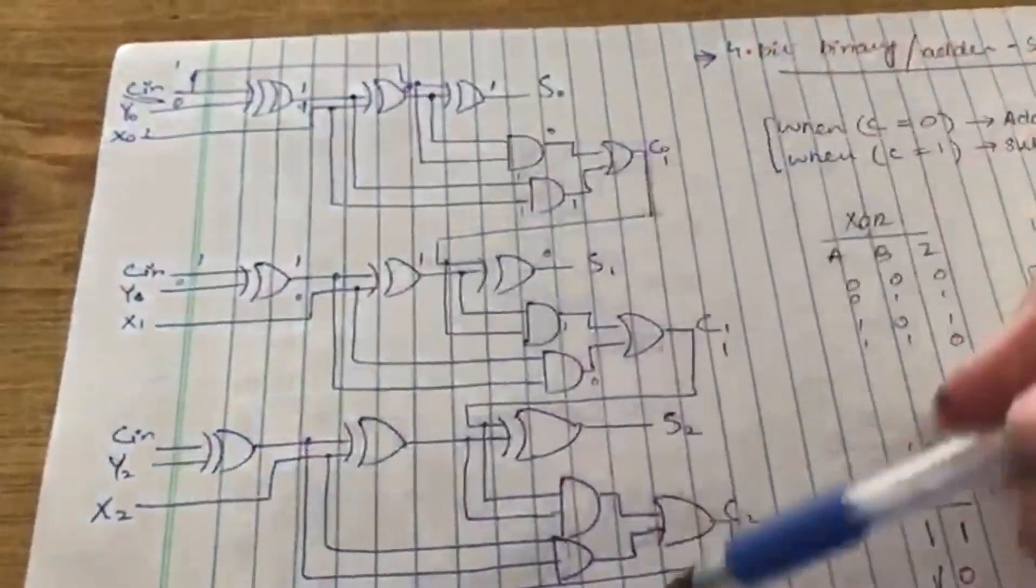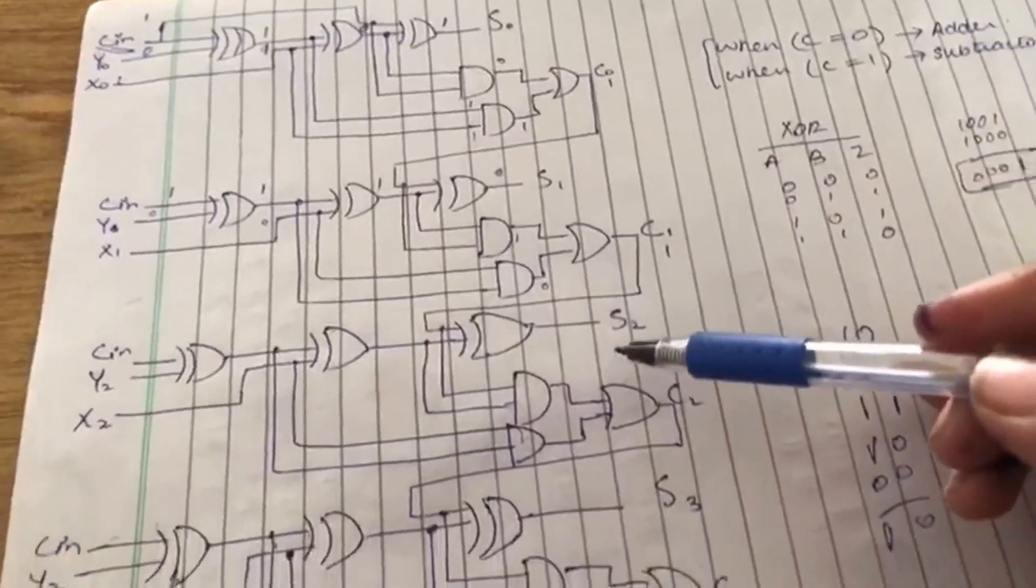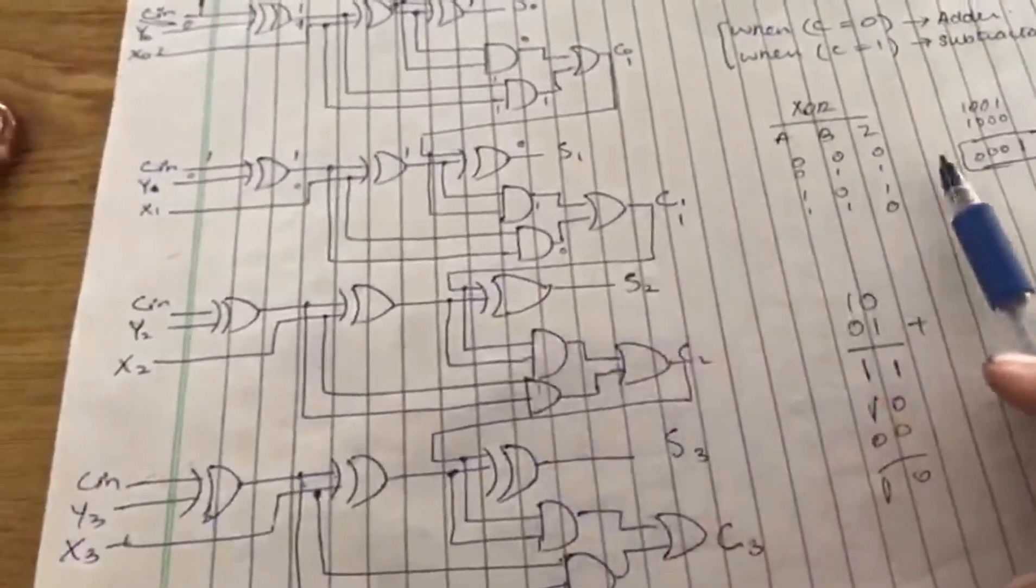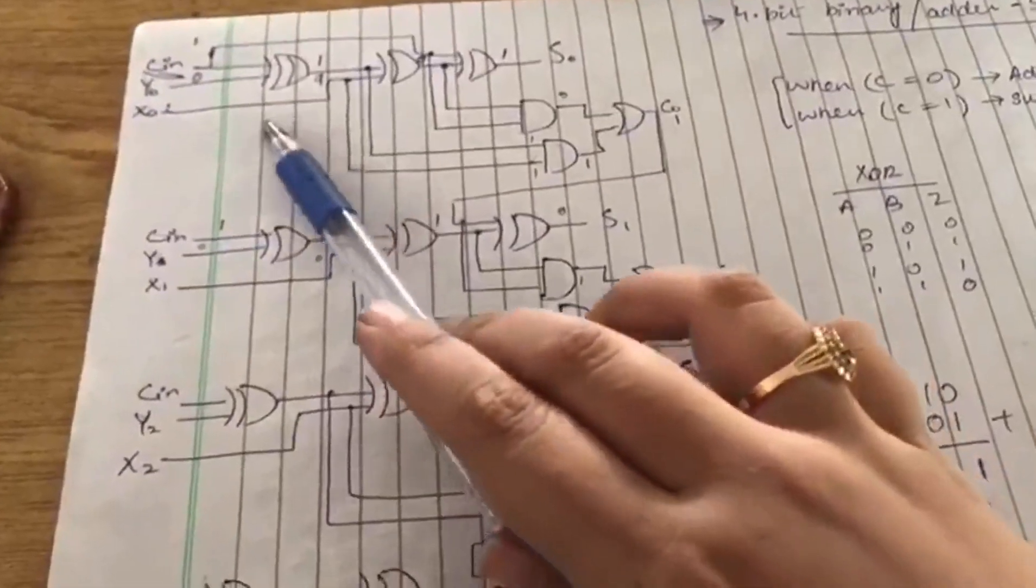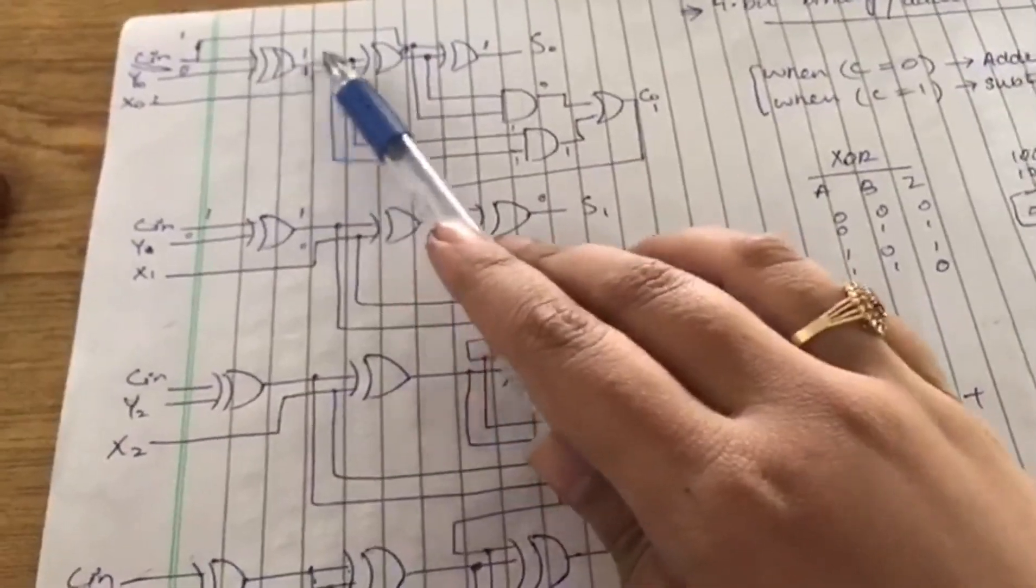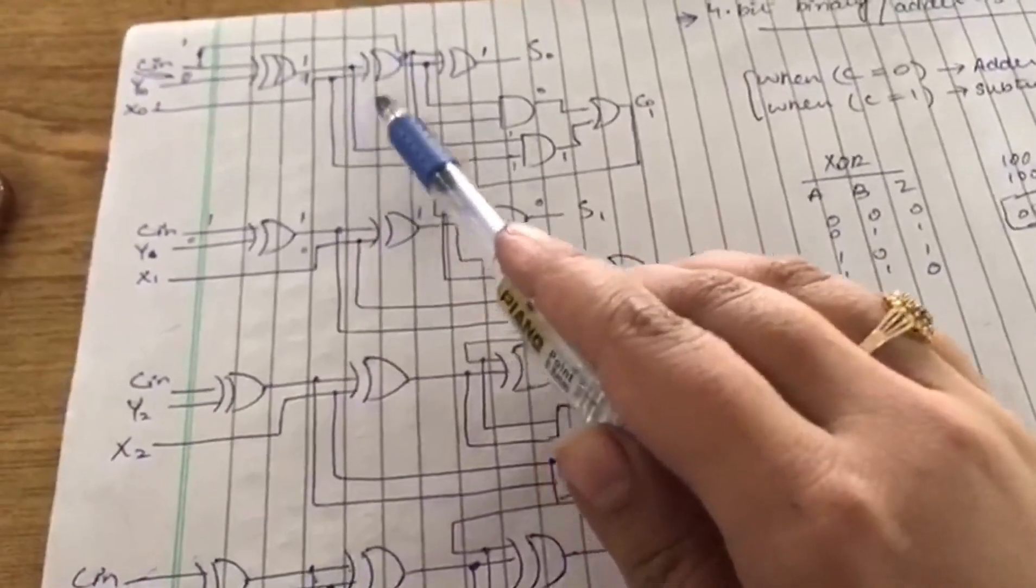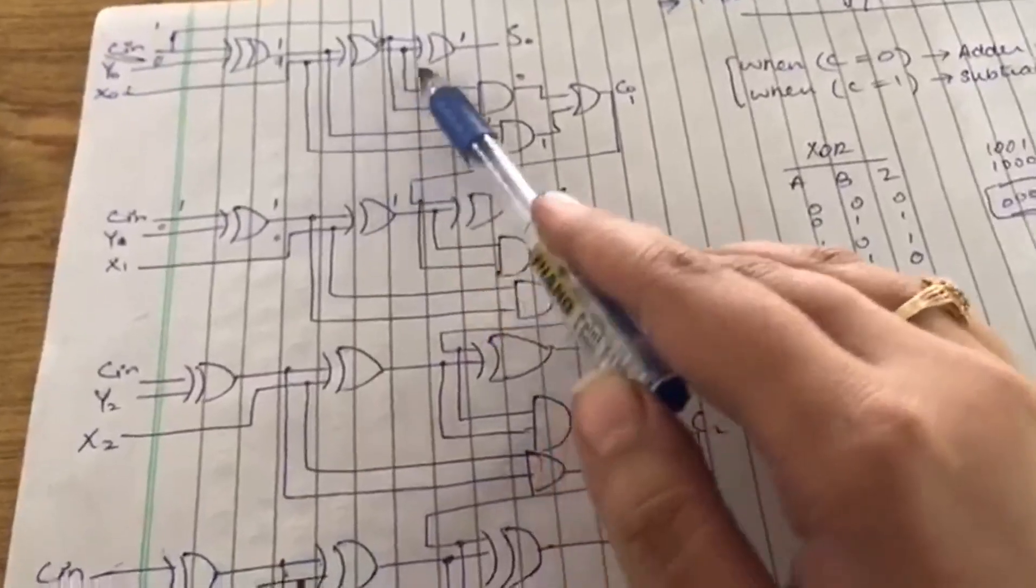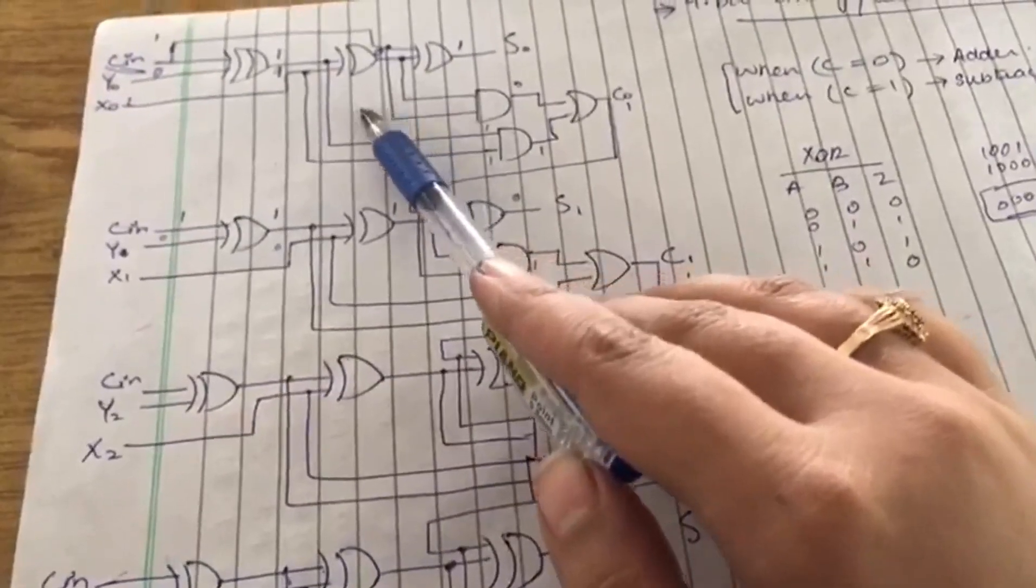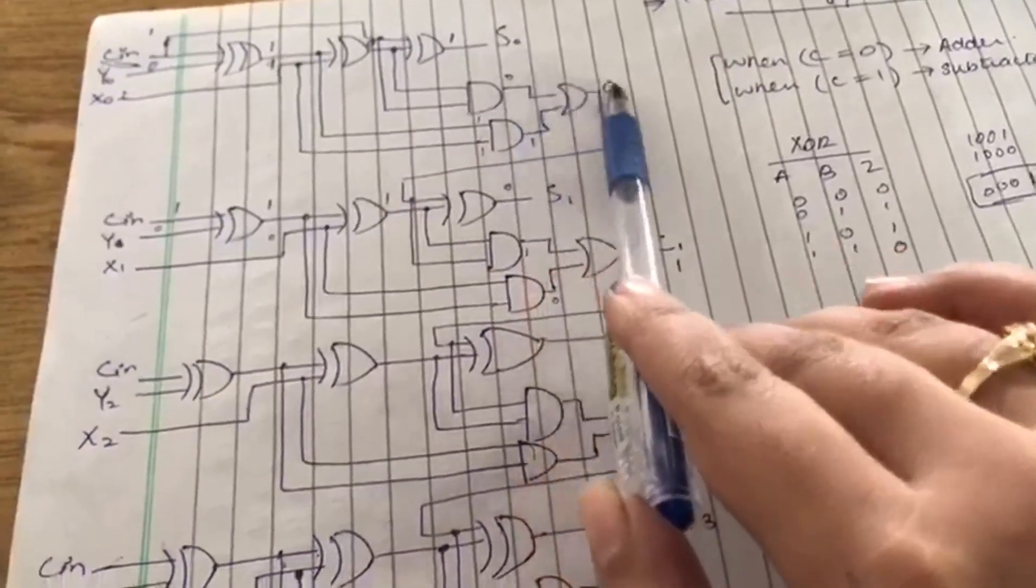This is a common scene. If we add two numbers with carry 0, it will perform addition. If the control is 1, it will perform subtraction on the two numbers.